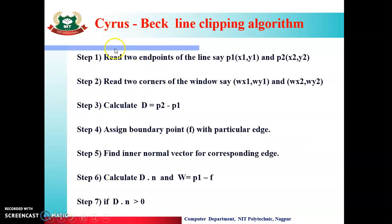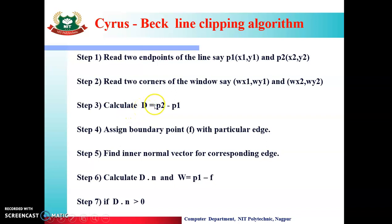Now the algorithm we will see is the Cyrus Beck line clipping algorithm. Step one: read two end points of the line, say P1 and P2, where P1 is (x1, y1) and P2 is (x2, y2). Step two: read two corners of the window, say wx1y1 and wx2y2. Step three: calculate the distance between the first point and second point, denoted by d, so d = P2 minus P1. Step four: assign a boundary point F with a particular edge.